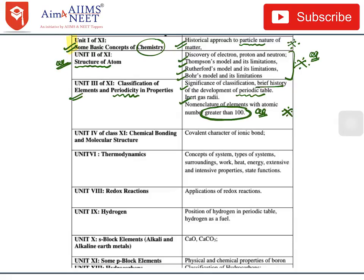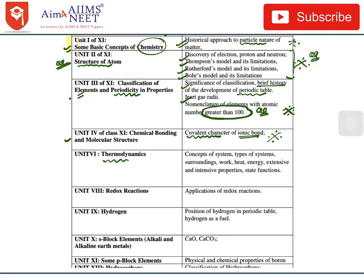In Unit 4 of Class 11 Chemistry — Chemical Bonding and Molecular Structure — the covalent nature of the ionic bond has been deleted from the syllabus. In Unit 6 — Thermodynamics — the concept of system, types of systems, surroundings, work, heat, energy, extensive and intensive properties, and state functions have all been deleted from the syllabus.